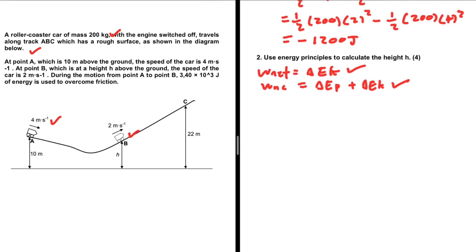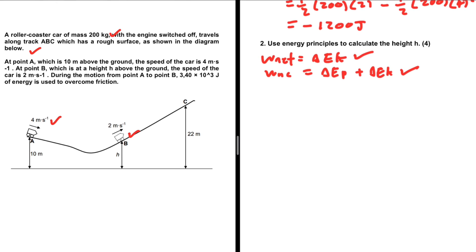So: W_non-conservative = ΔPE + ΔKE. We already have ΔKE from question one, which is −1200 joules. For the work done by the non-conservative force, the problem states that 3.4 × 10³ joules of energy is used to overcome friction — and that is the only non-conservative force acting on our object. What we don't have is the potential energy, which we'll use to calculate the height.